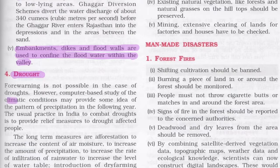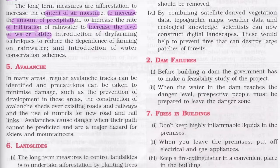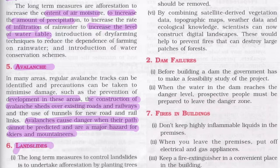For drought, forewarning is not easily possible, but computer-based study of climatic conditions may provide patterns of precipitation for the following year. In India, relief measures are provided to drought-affected people. Long-term measures include afforestation to increase air moisture content, precipitation, infiltration of rainwater, and water table levels. For avalanches, regular avalanche trends can be identified and precautions taken, including prevention of development in avalanche-prone areas, construction of avalanche sheds over roads and railways, and use of tunnels for new road and rail links.